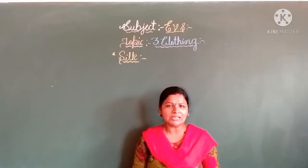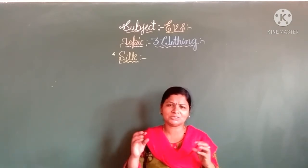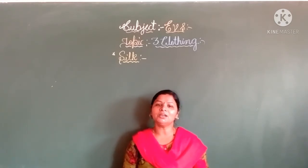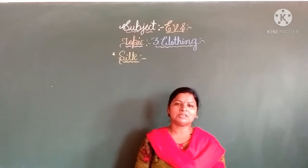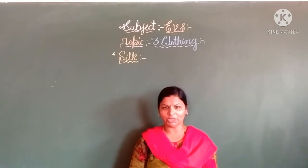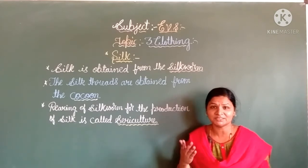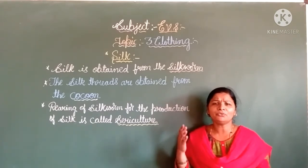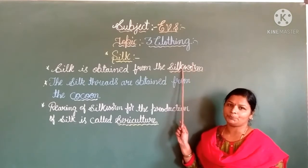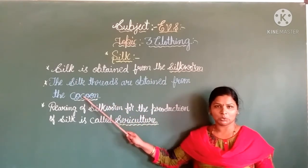Just a small insect is giving a beautiful, finest, smooth, shiny thread. It is a very wonderful process. Silk is obtained from the silkworms. The silk threads are obtained from the silkworms. So what is meant by a cocoon, and how is it created by the silkworm? Sericulture means the rearing or cultivation of silkworms for the production of silk.